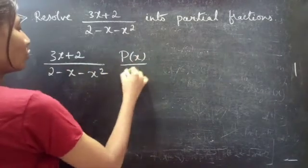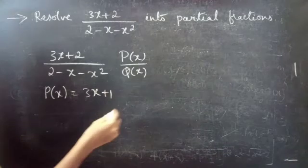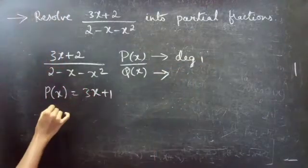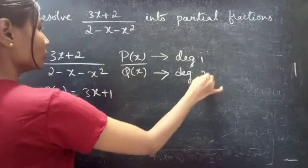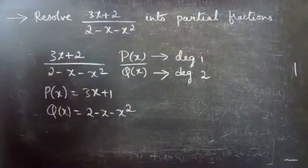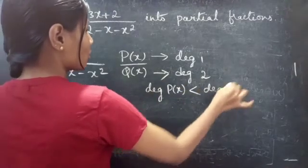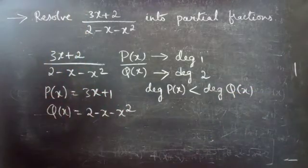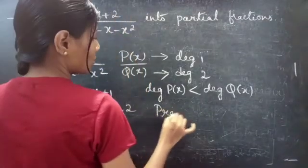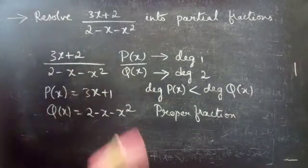Let's take it as p of x by q of x. Here we have p of x equals to 3x plus 2 and degree of p of x is 1. We have q of x equals to 2 minus x minus x square and degree of q of x is 2. So degree of p of x is less than degree of q of x — 1 is less than 2. From this we can see that the given fraction is a proper fraction.